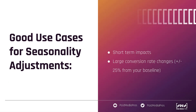That brings us to some use cases of when you want to use seasonality adjustments and when you might not. Good use cases are going to be anything that is a short-term impact anywhere from one to seven days, where you expect a large increase or decrease in your conversion rate from your baseline — think anything that's 25% higher or lower than what you're currently seeing. These are the best use cases if you're using smart bidding for any of those campaign types, or if you're using Performance Max or app campaigns.